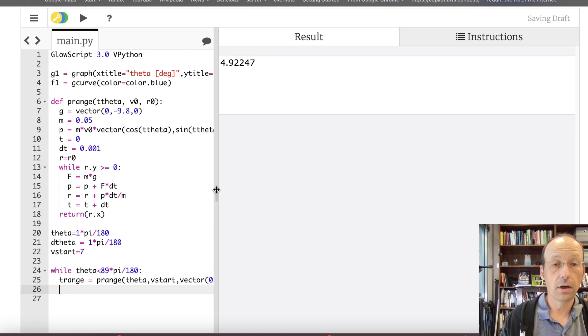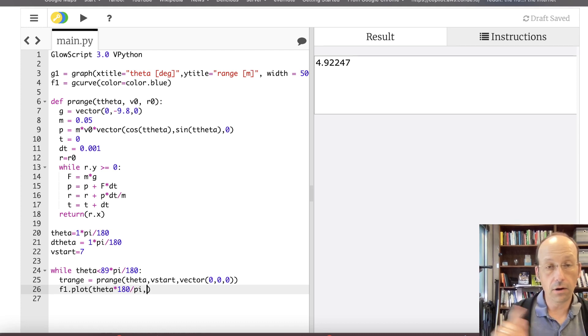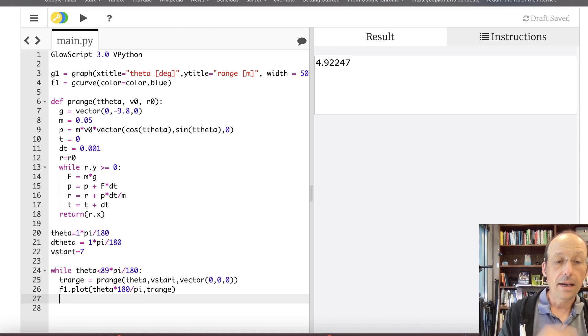So that did all the calculation for where it lands. Now I'm going to plot that. I know the angle and I know the range. So I'm going to say F1 dot plot. On the horizontal axis I want the angle. So it's going to be theta times 180 divided by pi. And then my vertical axis is going to be t_range. Now I want to increase my value theta and do it again. So I'm going to say theta equals theta plus d_theta. And I think that should work. Let's run it. I have a feeling it's not going to work though. But it worked.